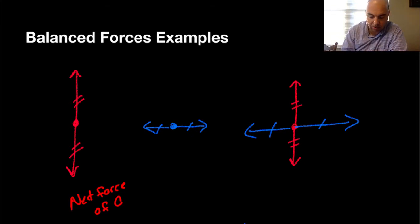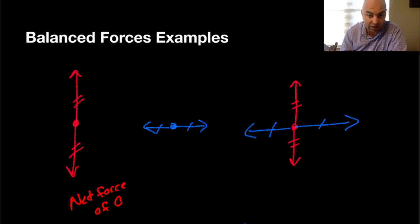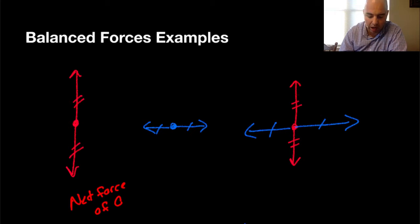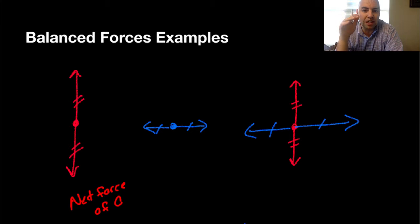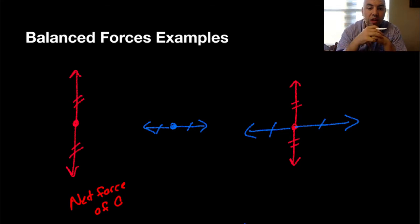Same thing here — we've got forces going on all different planes. We've got one going to the right that is balanced out by one going to the left of equal magnitude, just opposite in direction. And this one going up is balanced out by one going down. So when we talk about balanced forces, we mean forces that are equal in magnitude but opposite in direction — those balance each other out.